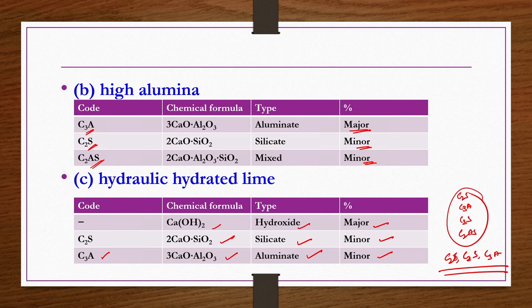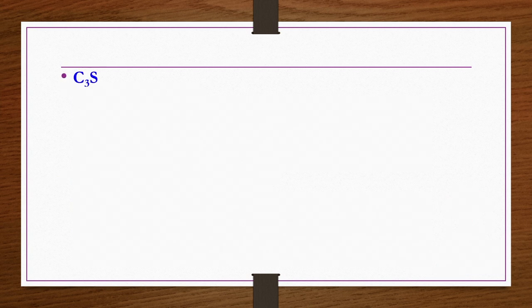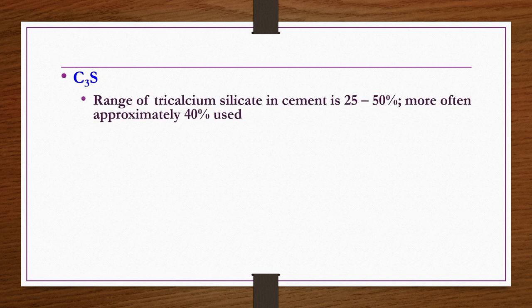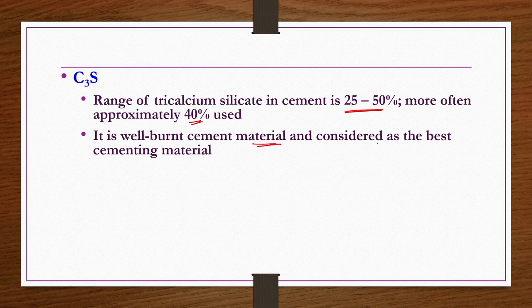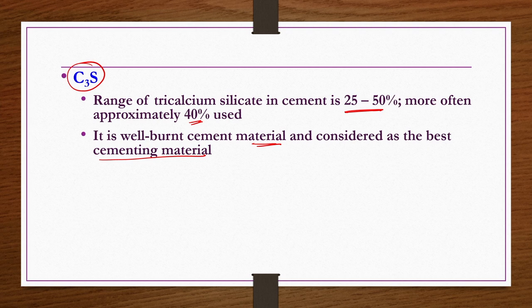Each constituent has a specific role. Cement is essentially a mixture of C2S, C3S, and C3A components. C3S, tricalcium silicate, ranges from approximately 25 to 50 percent in cement, more often around 40 to 42 percent. It is well-burnt cement material and considered the best cementing material. It quickly reacts with water and releases more heat of hydration, making it responsible for early hardness and strength of the cement concrete.